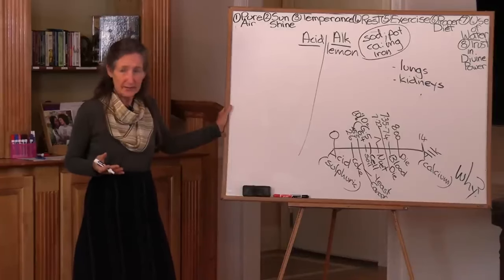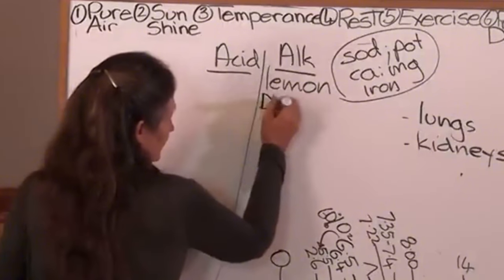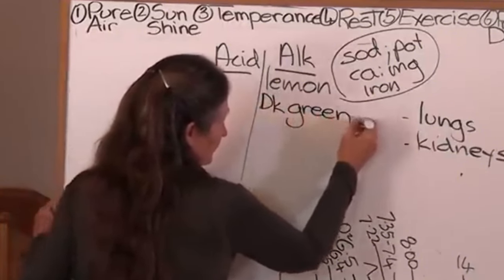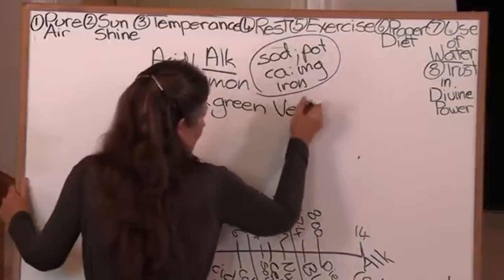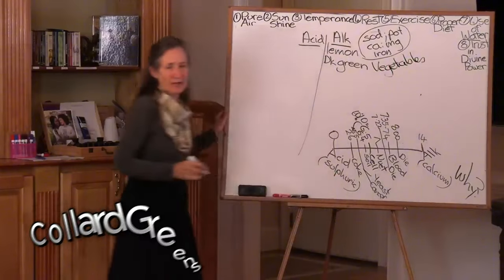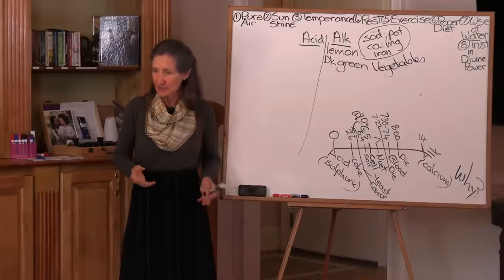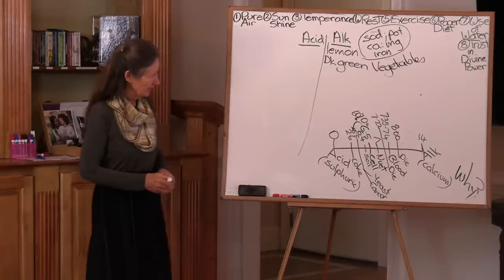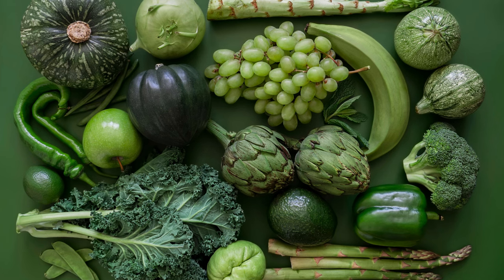Every home should have a lemon tree. And if you're in a unit, you can have a lemon tree in a pot on your veranda. Dark green leafy vegetables are also alkaline forming. Dark green leafy vegetables we should be eating every day. That's your kale, your parsley, collard greens. We should be eating something from the dark green family of vegetables every single day. And if you don't, you really should have a dose of green barley or super greens.